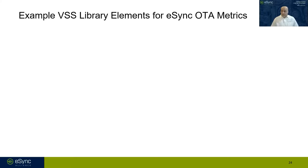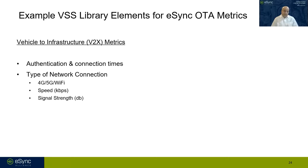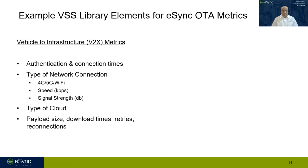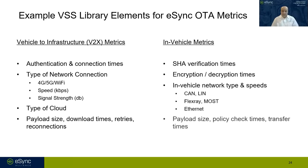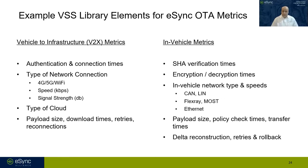To outline an example: vehicle infrastructure metrics include authentication and connection times; type of network — 4G, 5G, or Wi-Fi — because bandwidth impacts performance; type of cloud; payload size; download times; and retries. Vehicle metrics include SHA secure hash verification time, encryption/decryption times, in-vehicle network speeds — CAN is slow, LIN is even slower, FlexRay is faster, MOST, and Ethernet is the fastest. You can also define payload size, policy check times, transfer times, and delta reconstruction. These are all metrics set up for our evaluation.